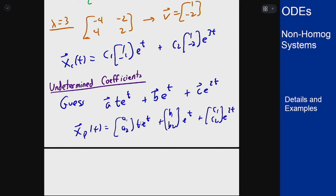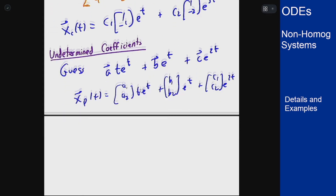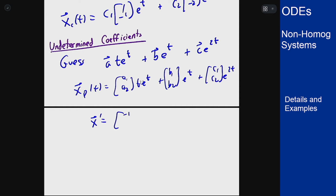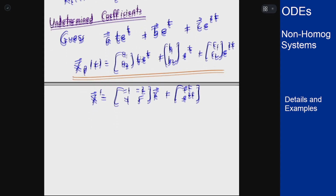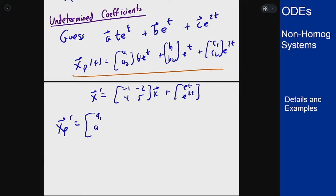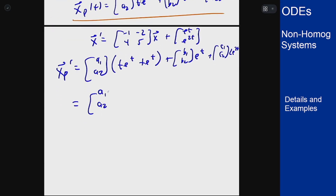Now I want to plug this into our differential equation. Our equation says x prime equals the matrix [-1, -2; 4, 5] times x, plus [e to the t, e to the 2t]. Plugging in and computing the derivative, I group terms: [a1, a2]·t·e to the t, then [a1+b1, a2+b2]·e to the t, then [2c1, 2c2]·e to the 2t.